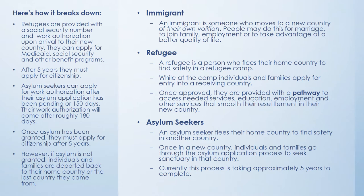An immigrant is someone who moves to a new country of their own volition. People may do this for marriage, to join a family member, for employment, or to take advantage of a better quality of life. A refugee is a person who flees their home country to find safety in a refugee camp. While at the refugee camp, those individuals and families apply for entry into a receiving country. Once approved, they are provided with a pathway to access needed services, education, employment, and other services that smooth their resettlement in their new country.